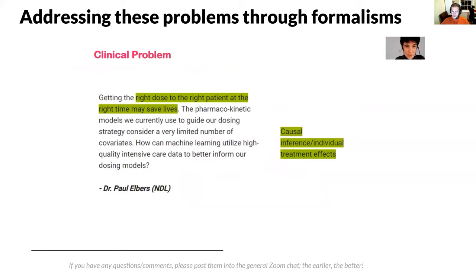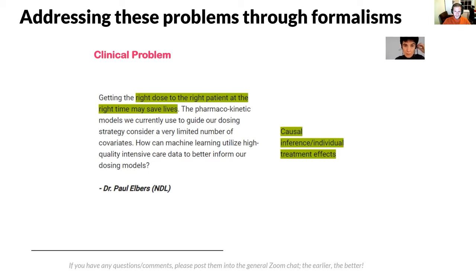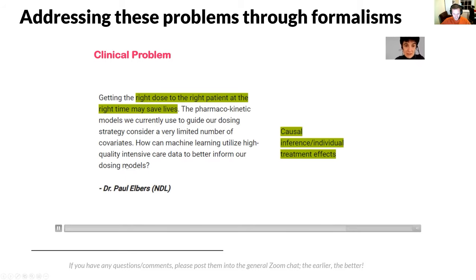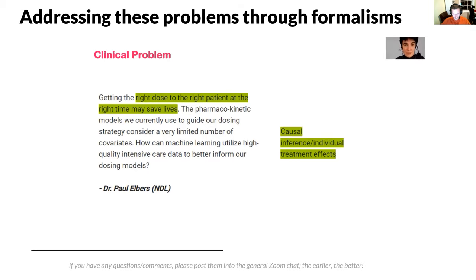This is a counterfactual estimation problem — an individualized treatment effect problem — which can be formalized and solved using machine learning models. For this we developed a counterfactual recurrent neural network, which is able to compute counterfactuals over time using a novel sequence-to-sequence architecture to estimate the effect of different treatments on the patient over time. We can also answer questions posed by Paul regarding the right dose to be given to the patient at a particular moment in time. However, Paul's challenge involves a decision about a continuous variable rather than a discrete treatment — discrete versus continuous treatment. This represents the state of the art in machine learning right now. While the problem can be formalized within causal inference and estimation of individualized treatment effects, solutions are a lot more complex and more research is needed.